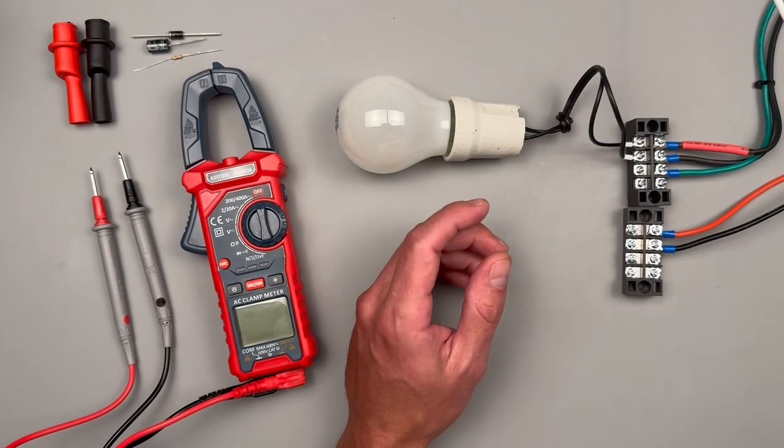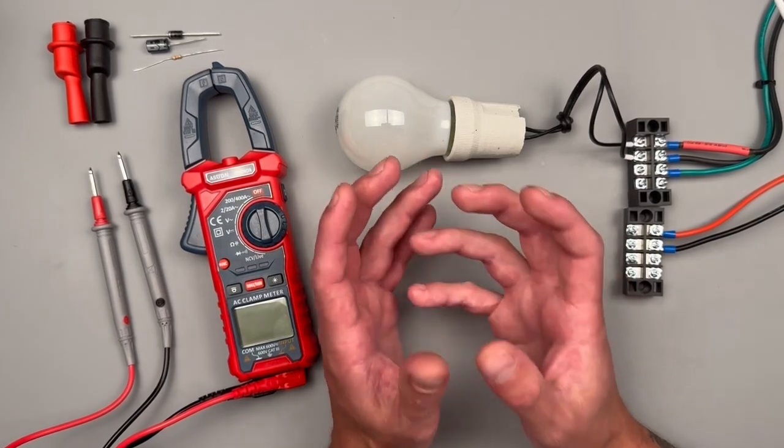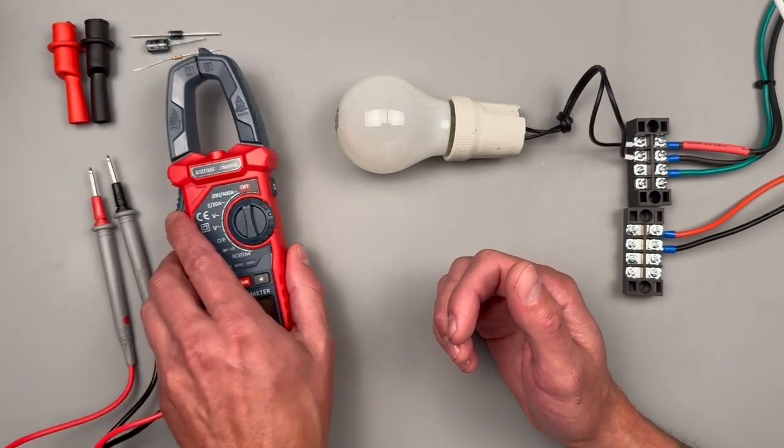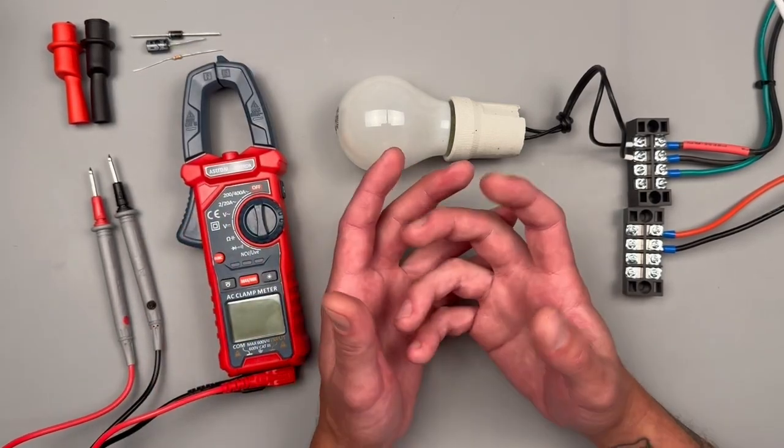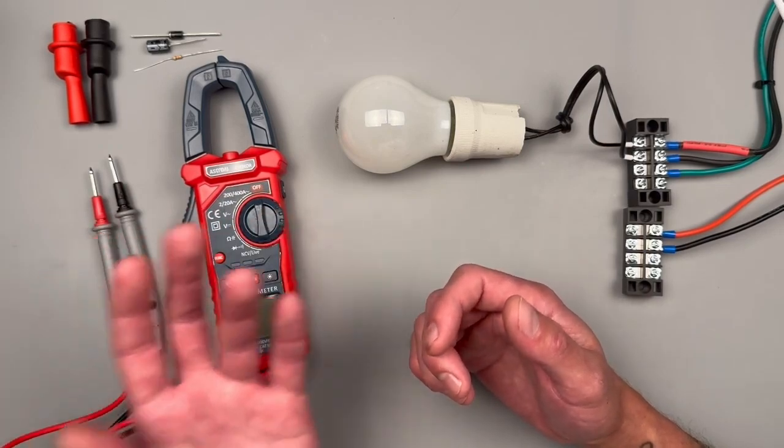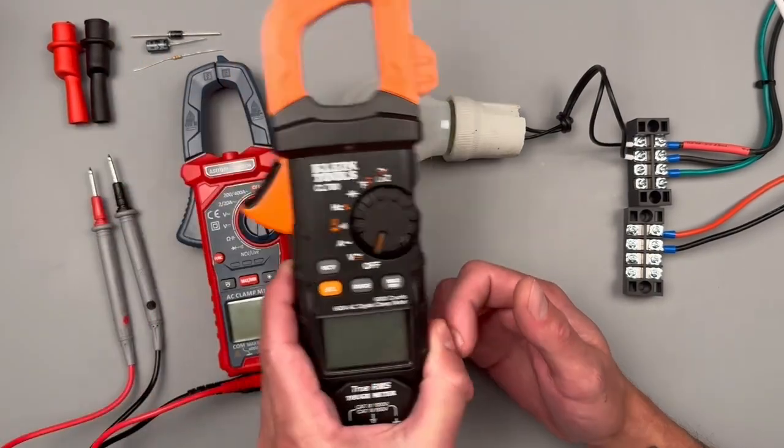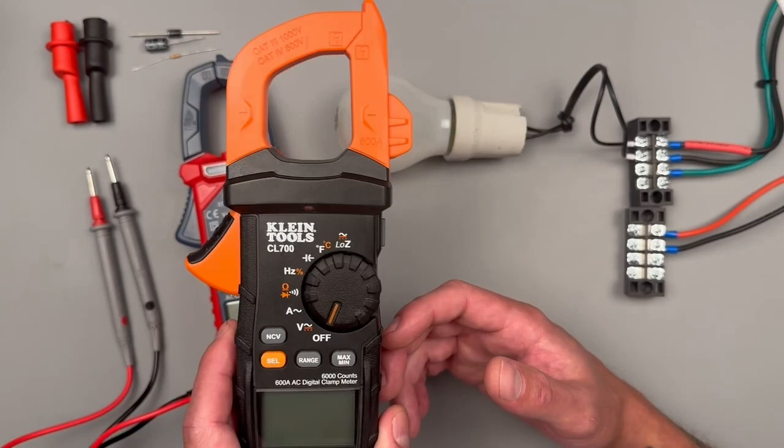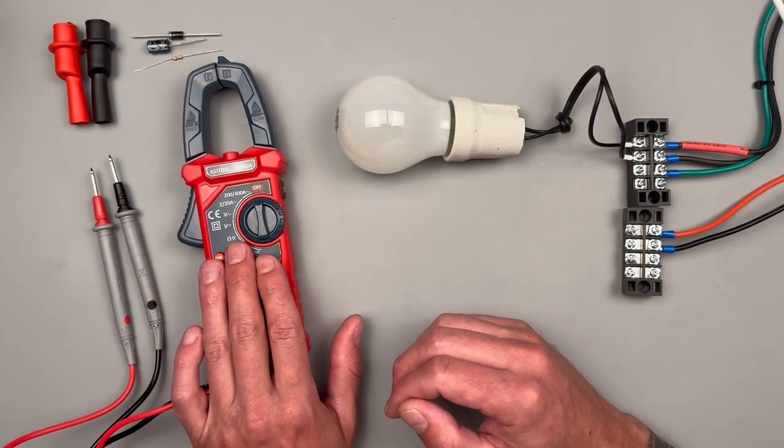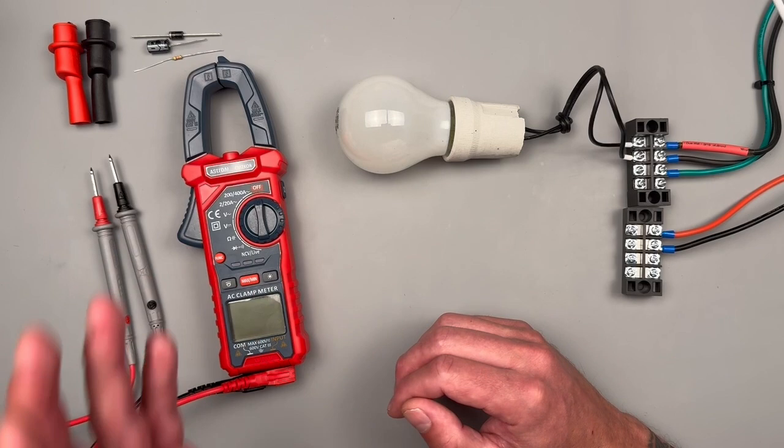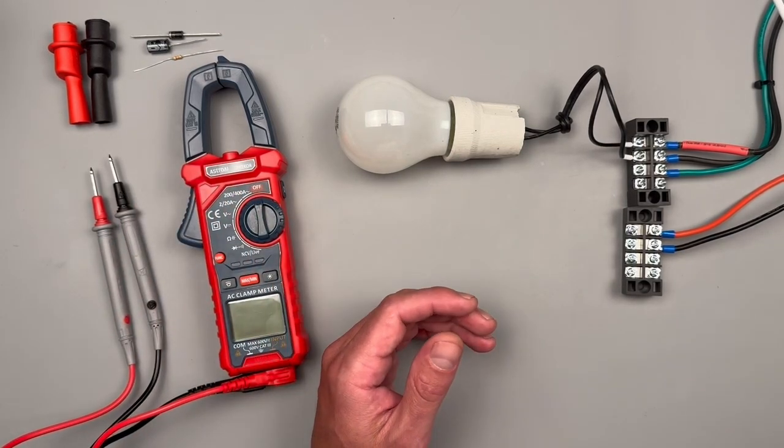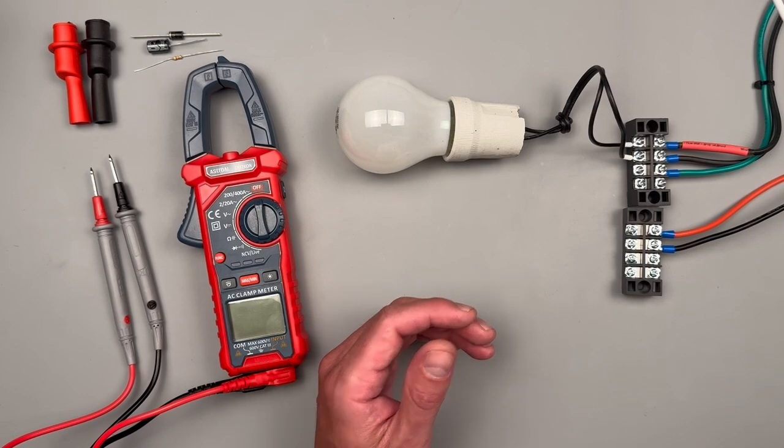I think this meter is great for that application because it's at a really low price point with a lot of functions. That way if you do take it in the RV or have it in the camper and it gets lost or broken or something like that, you're only out 20 or 30 bucks as opposed to if you invested in something a little bit nicer you'd be out for quite a bit more. You've already purchased this meter, great for you. If you're on the fence about it, you really can't beat Astro AI for that low-end price.